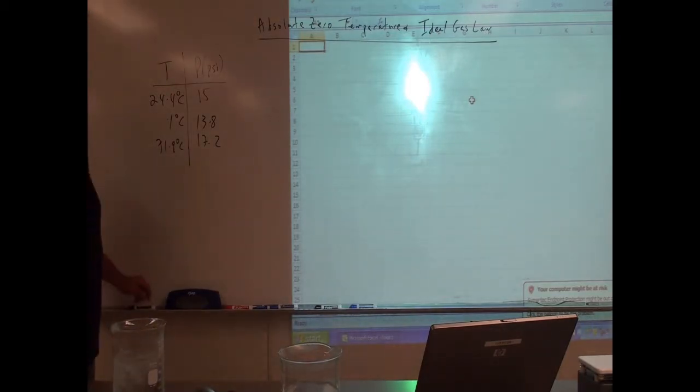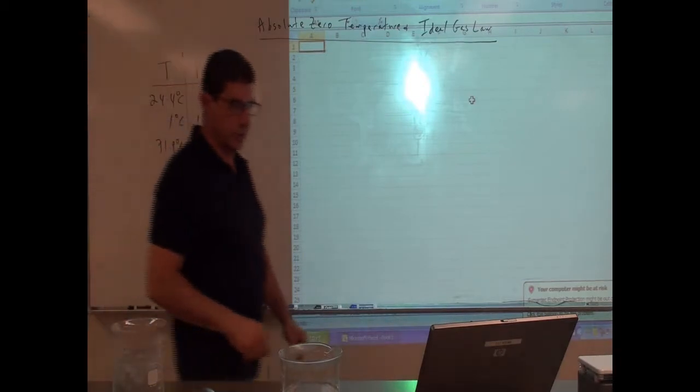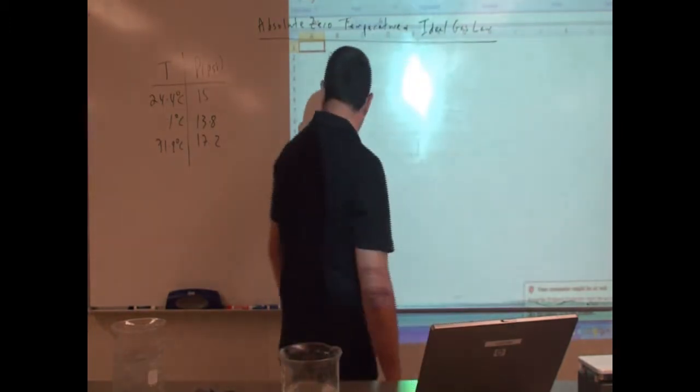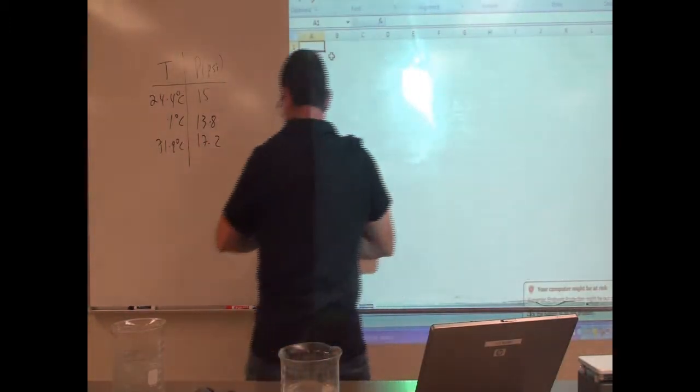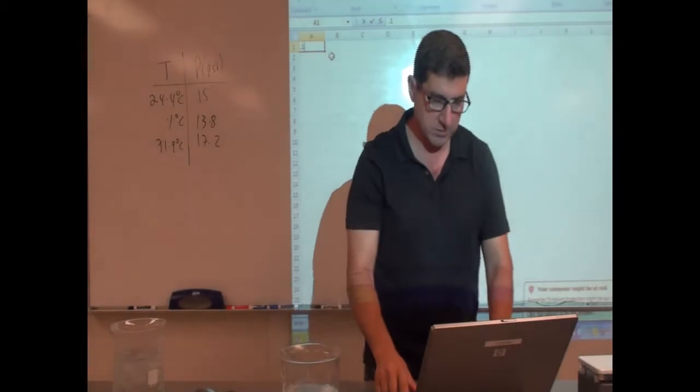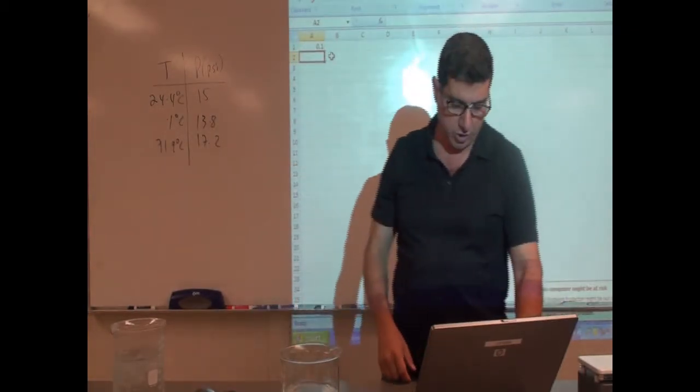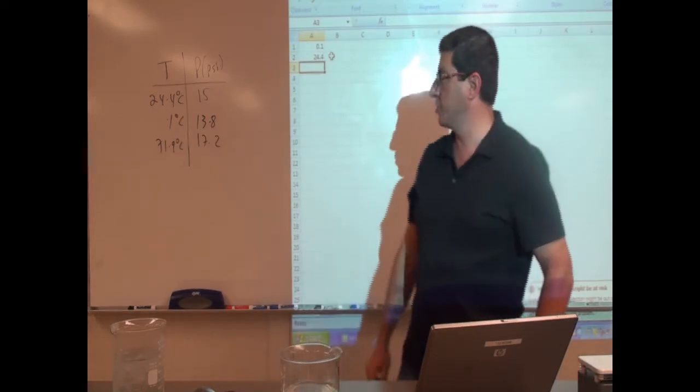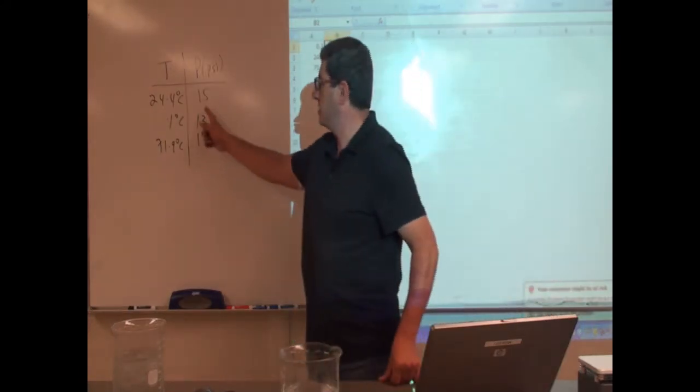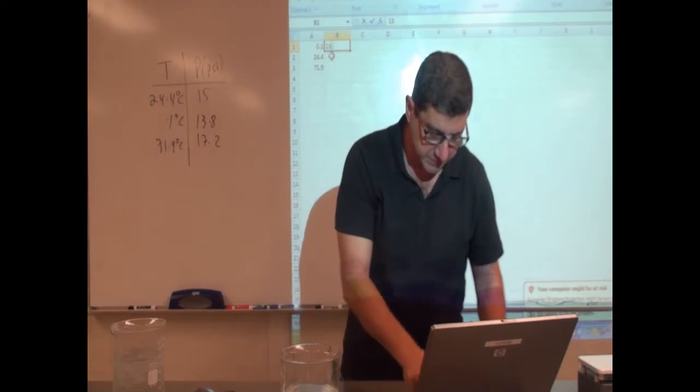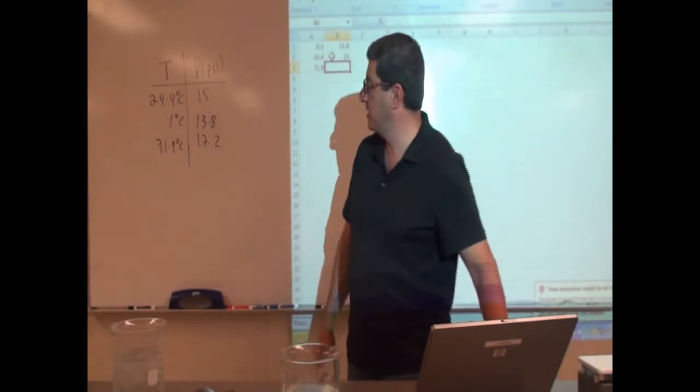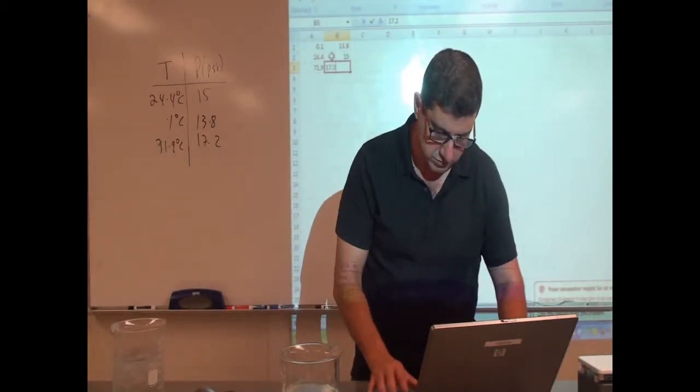So you've got three data points right here. So what I can do is I can put here the temperature at the left. I'm going to, on the left, I'm going to put the temperature. So the lowest temperature was 0.1. Then I'm going to put the next temperature, 24.4. Then I'm going to put the next temperature, 71.9. Then I'm going to put my three pressure readings. It's going to be 13.8 PSI. And then the next one is 15 PSI. And then the next one is 17.2.